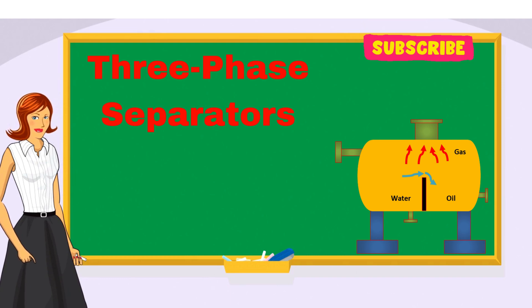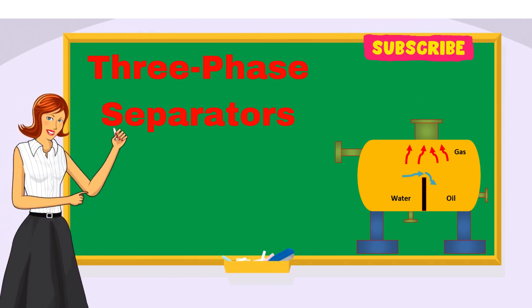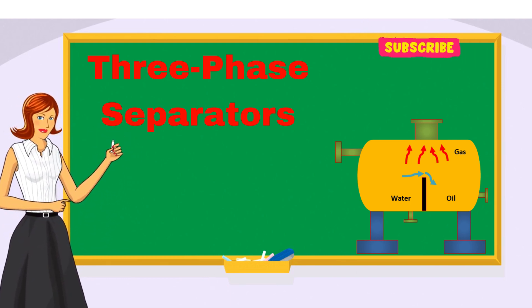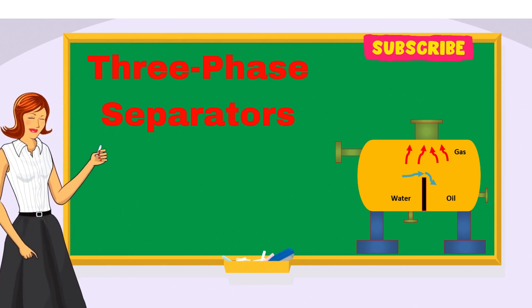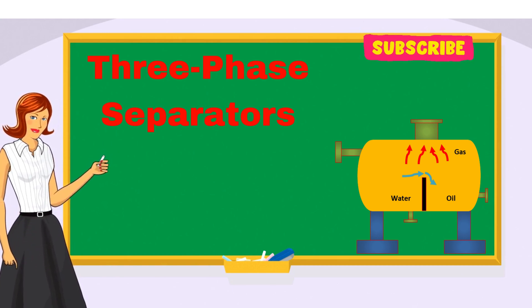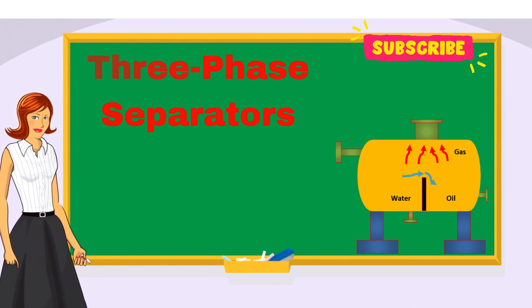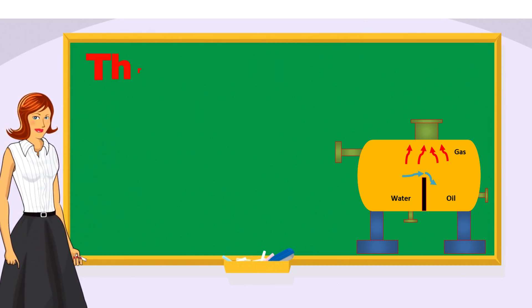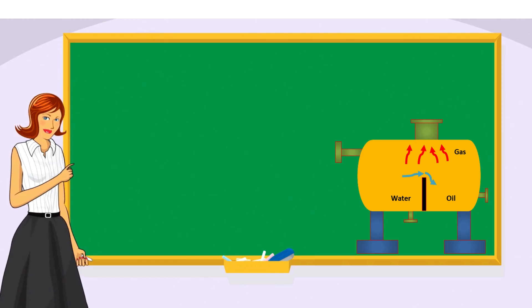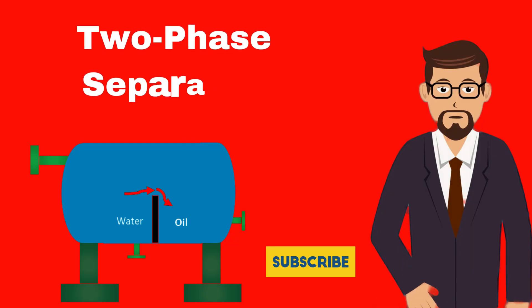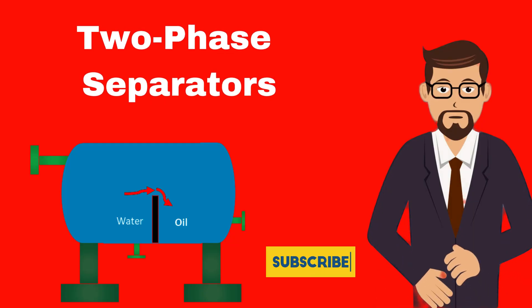The third type is the three-phase separator. This type is designed to separate three different components — oil, water, and gas — all at the same time. It includes specialized internal components to ensure efficient separation of all three phases, making it ideal for complex processing needs.